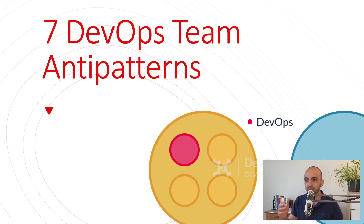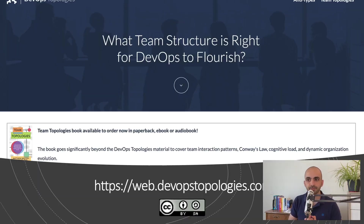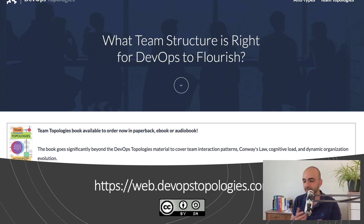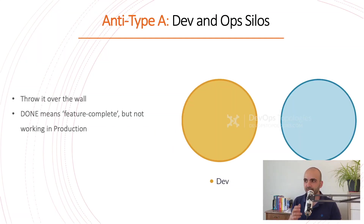We are going to discuss the top seven DevOps team anti-patterns, and in the next video we'll demystify real good patterns for having a DevOps team according to your organization's situation. For the source of this video I've used this website, which I highly suggest you visit for other blog posts — they also have a book. So, anti-pattern A: that's the classic 'throw it over the wall' pattern.